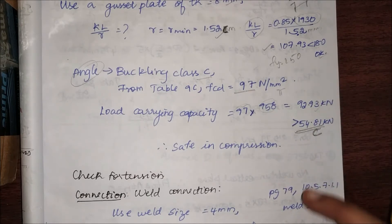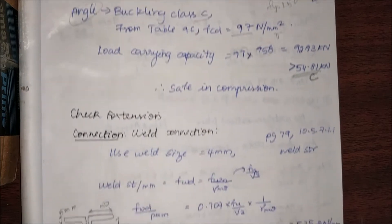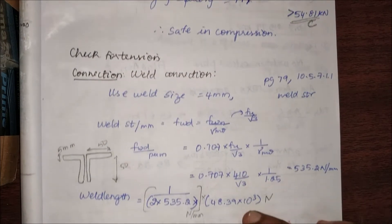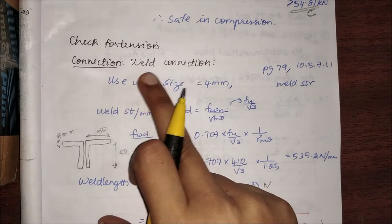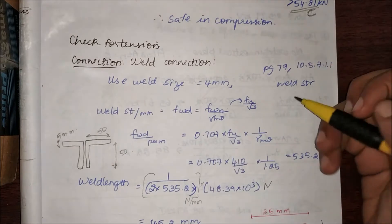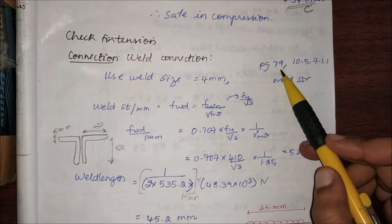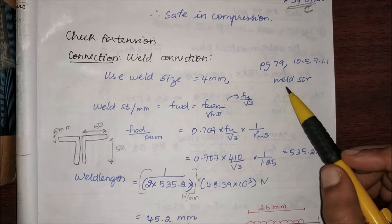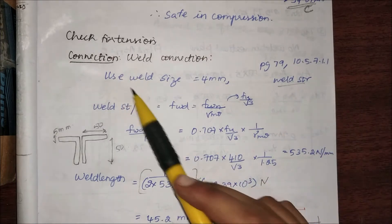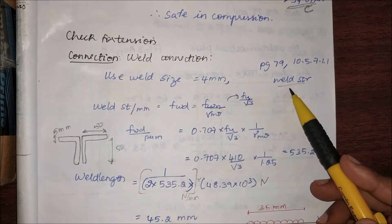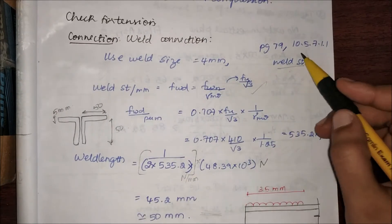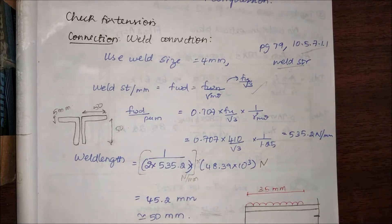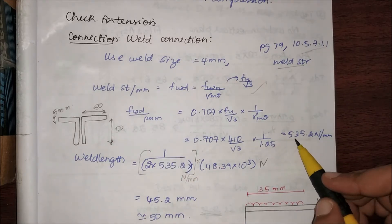Now coming to the tension part, we have to find the design tension. In order to find the tension, we have to first assume a connection for the given member. I'm going to go for weld connection for simplicity. If you go to page number 79, clause 10.5.7.1.1, the weld strength is given. Using a weld size of 4 mm, my weld strength per meter is 535.2 N/mm.